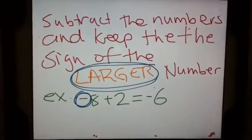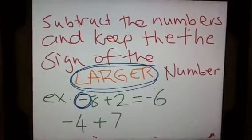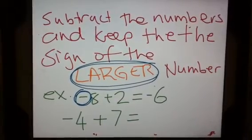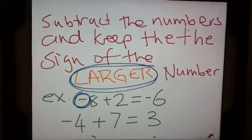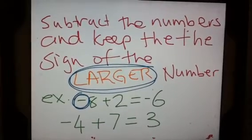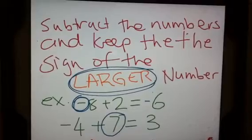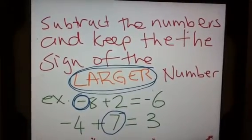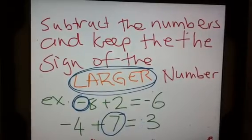One more example: if my question was negative 4 plus 7, I find the difference. What's the difference between 7 and 4? The difference is 3. Now I look at the equation — it's a negative 4 and a positive 7. The 7 is the larger number, so the answer is going to be positive 3. You can put the sign in, or you can just leave it out.